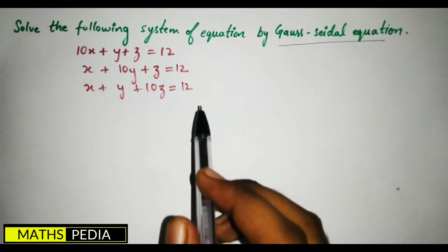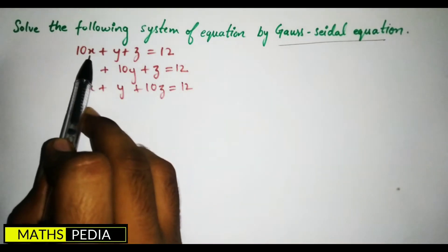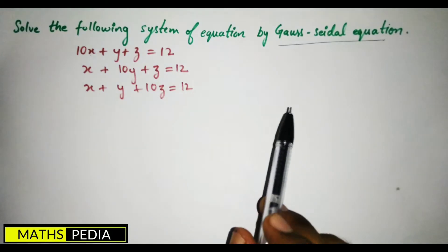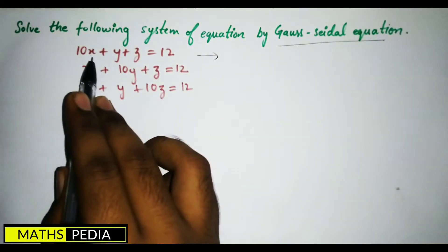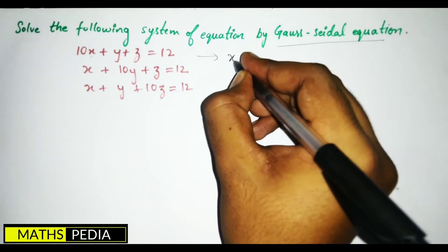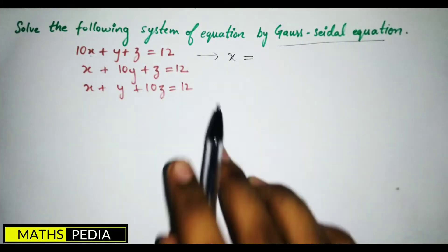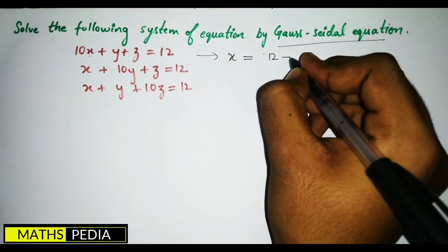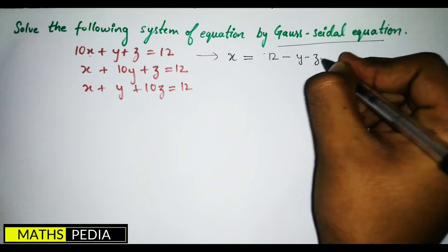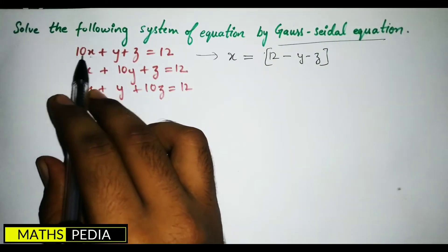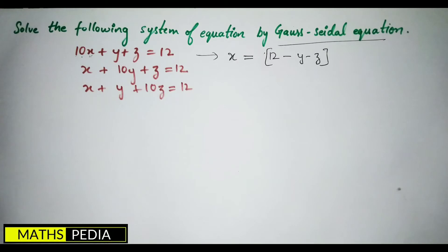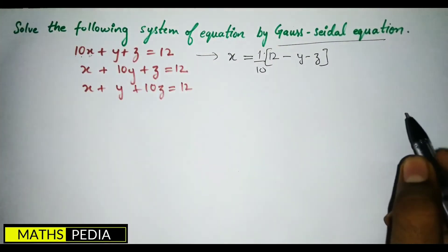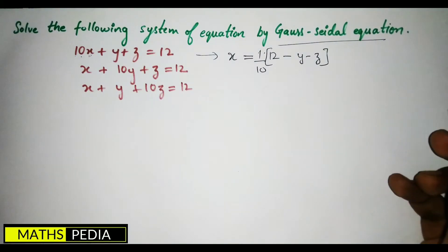The first thing you have to understand is that you keep x on one side and shift all the other terms to the RHS. So I will keep x on the LHS and shift all others to the RHS. It becomes x = (1/10)(12 − y − z), since x was multiplied by 10 it comes in division form.